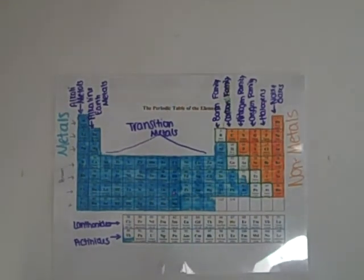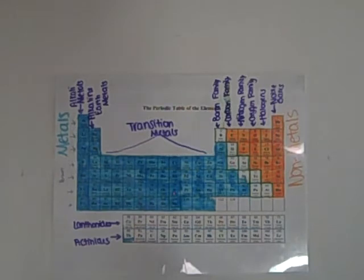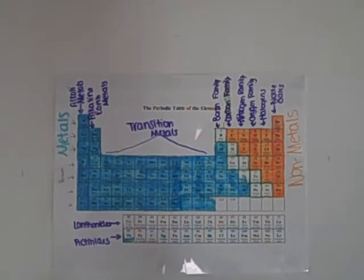There are 11 different families. There are alkali metals, alkaline earth metals, transition metals, boron family, carbon family, nitrogen family, oxygen family, halogens, and noble gases.